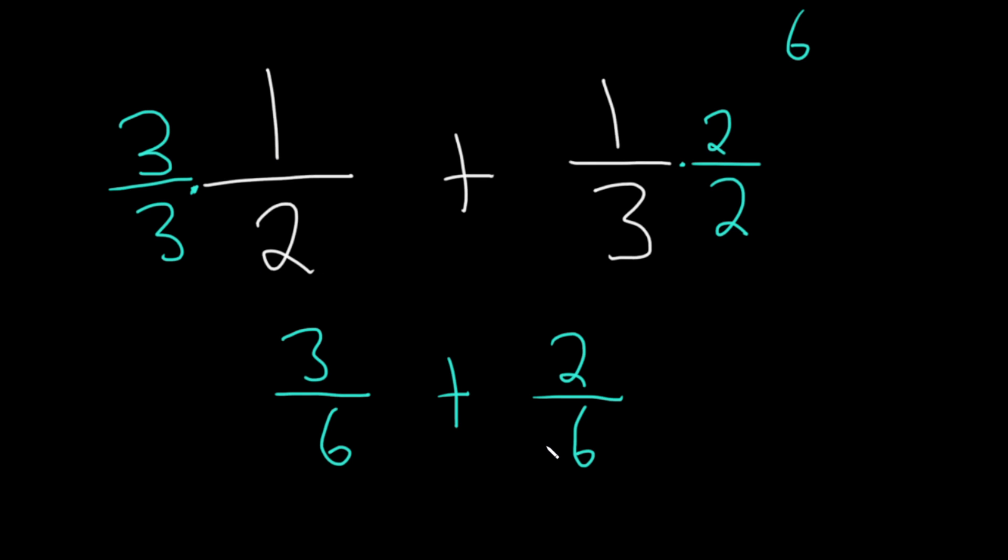And now we have the same denominator, right? The number on the bottom is called the denominator. The number up top is called the numerator. So we can add the fractions. And you just basically add the numerators. 3 plus 2 is 5. So we get 5 over 6.